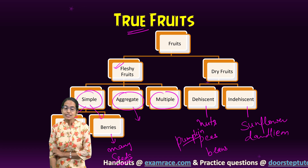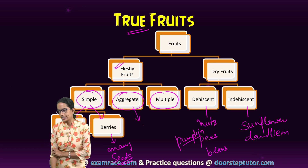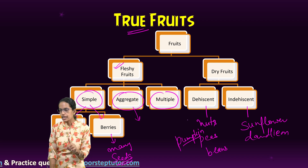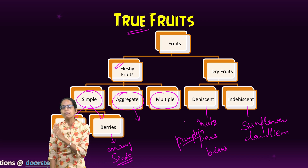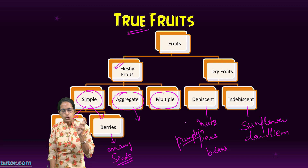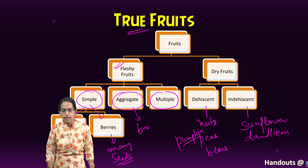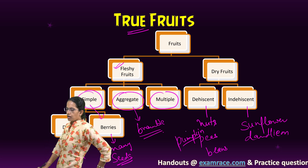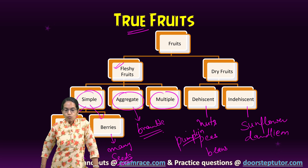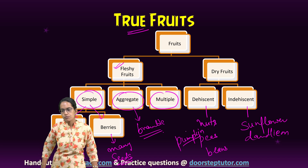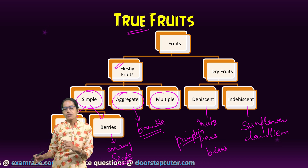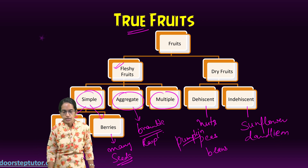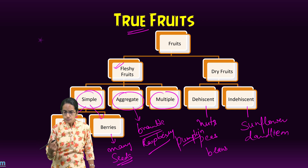Then we have aggregate fruits. The difference between simple and aggregate is that simple has a simple ovary with only one pistil, while aggregate has numerous simple pistils. The good example of aggregate fleshy fruit is bramble, or what is known as blackberry — one ovary with multiple pistils. Raspberry is another good example of an aggregate fruit.